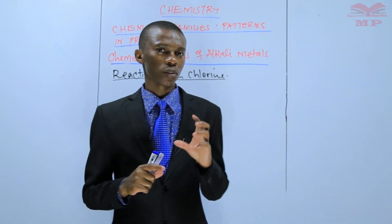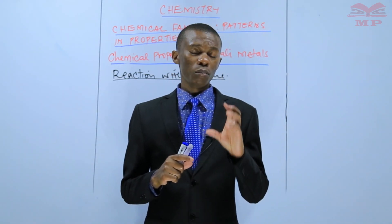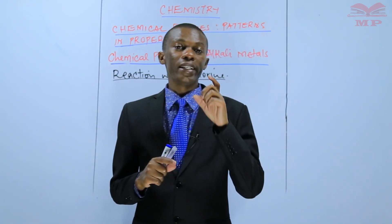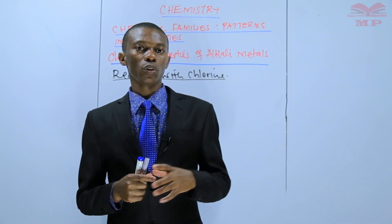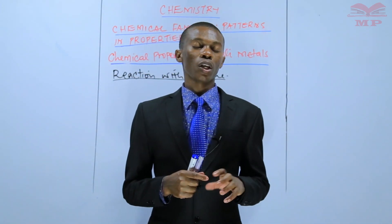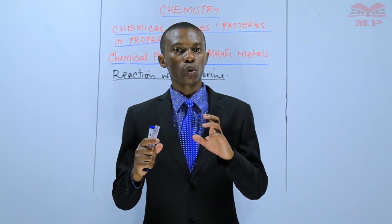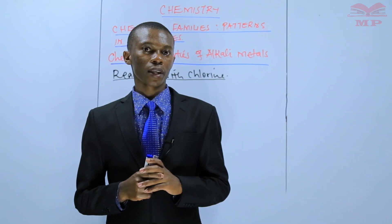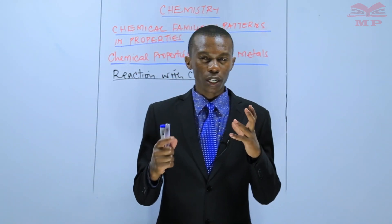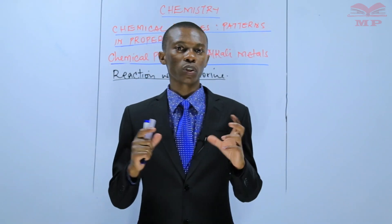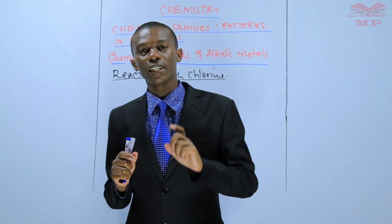Remember in the previous lesson we discussed the reaction between chlorine gas and sodium metal. If you cut a small piece of sodium metal, place it on a deflagrating spoon, warm it and lower it into a gas jar containing chlorine, then you are going to observe white fumes. The white fumes are sodium chloride, as a result of the reaction between sodium metal and chlorine gas.